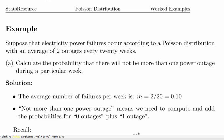In this presentation we are going to look at the Poisson distribution. Suppose that electricity power failures occur according to a Poisson distribution with an average of two outages every 20 weeks.